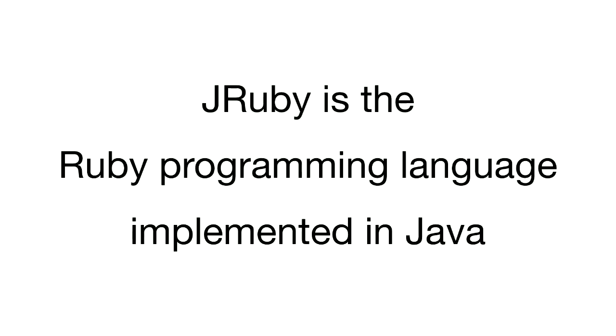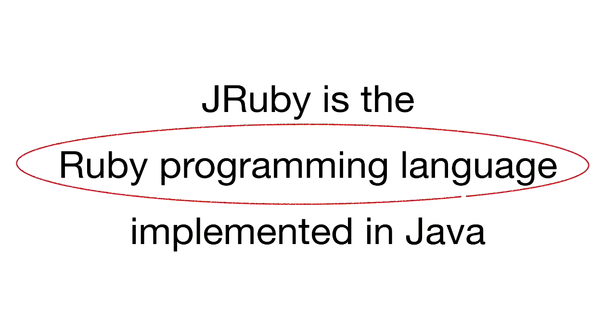JRuby is the Ruby programming language implemented in Java. So what does that mean? Let's break it down. Let's tackle this bit first: what is the Ruby programming language? If we can talk about the programming language separate from some implementation, then it must exist independently. So what does that look like?